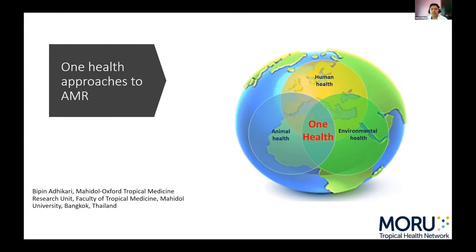From these reports, 60% of pathogens that cause human diseases come from animals or wildlife. 75% of emerging human pathogens are of animal origin, and 80% of pathogens that are of concern for bioterrorism are also of animal origin.